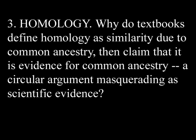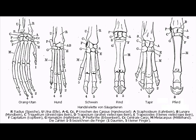Number three: Homology. Why do textbooks define homology as similarity due to common ancestry, then claim that it is evidence for common ancestry — a circular argument masquerading as scientific evidence? This one really irritated me because he doesn't apparently know what a circular argument is. The definition of homology came from analyzing actual similar characteristics in living things, and then writing up the definition based on observed evidence. They did not make up the definition out of thin air. A circular argument is like saying the Bible is true because God exists, and God exists because it says so in the Bible. That's what a circular argument is.